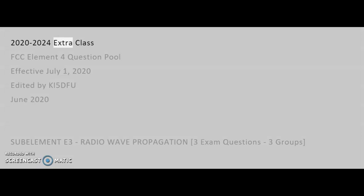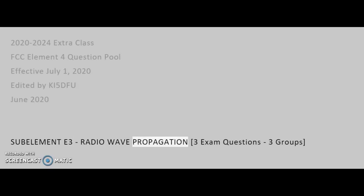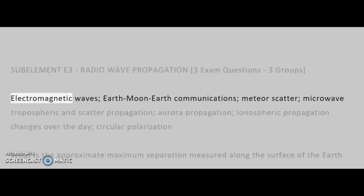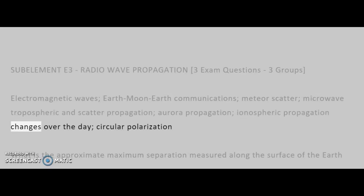2020-2024 Extra Class FCC Element 4 Question Pool, effective July 1, 2020. Edited by KI5DFU, June 2020. SubElement E3: Radio Wave Propagation — 3 exam questions, 3 groups. Topics include: Electromagnetic Waves, Earth-Moon-Earth Communications, Meteor Scatter, Microwave-Tropospheric and Scatter Propagation, Aurora Propagation, Ionospheric Propagation Changes Over the Day, and Circular Polarization.